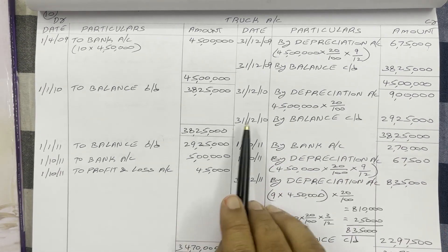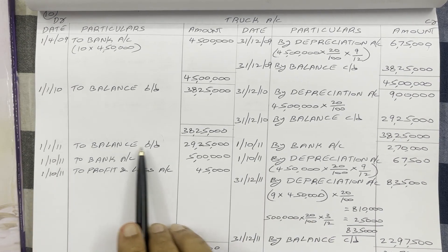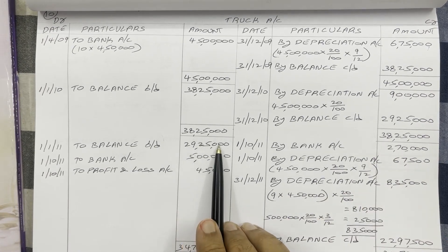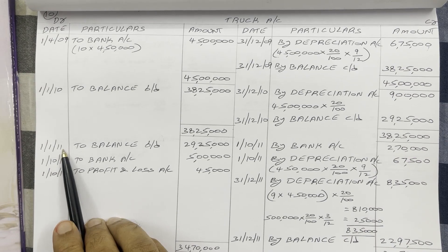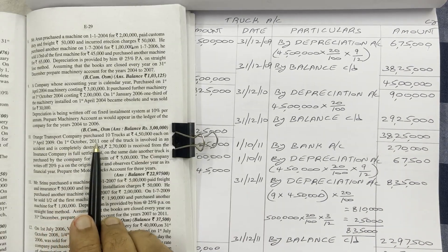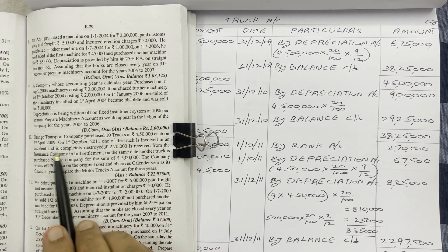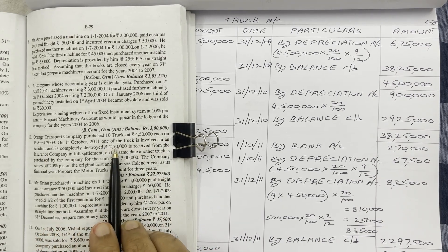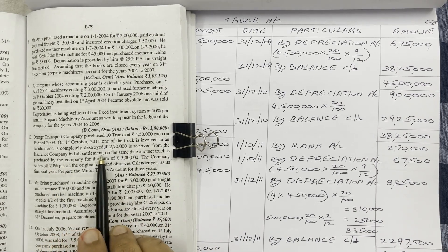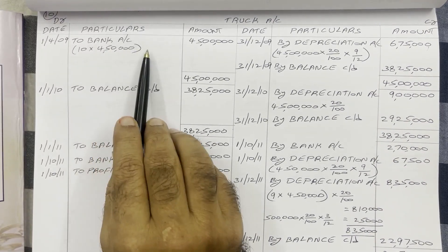Come to the third year. Write 1st January 2011 and bring the balance brought down of Rs 29,25,000. In 2011, what happened? On 1st October 2011, one of the trucks is involved in an accident and is completely destroyed. Rs 2,70,000 is received from the insurance company in full settlement. So in these 10 trucks, one truck is damaged.